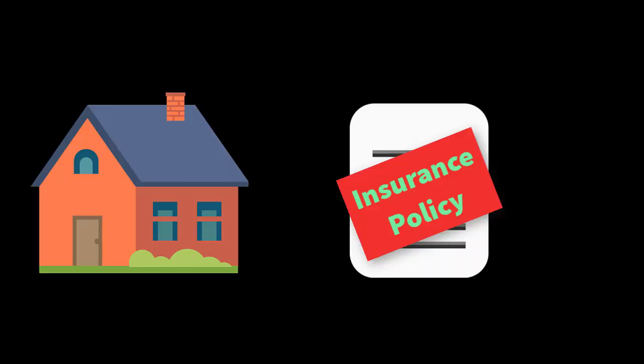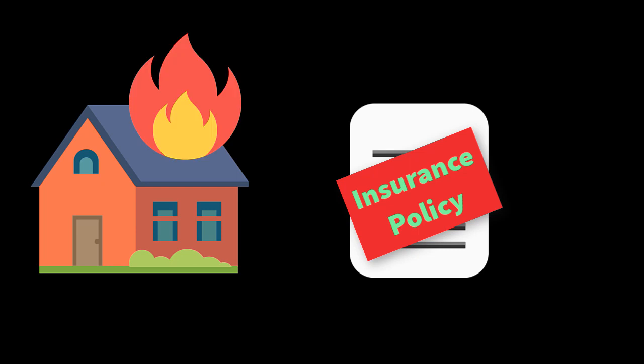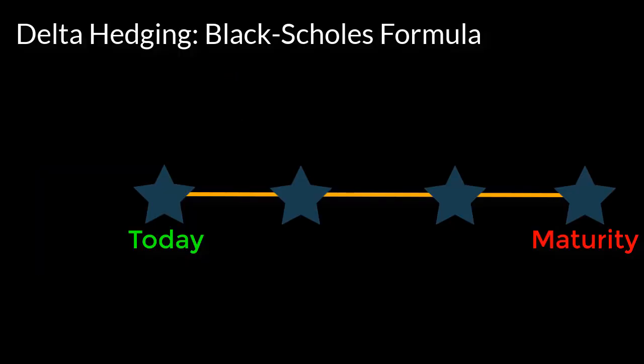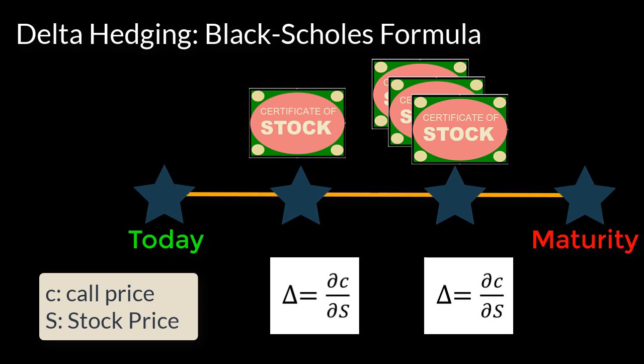Think of hedging as home insurance, but in finance we use hedging to reduce risk from stock price movement. The amount of stocks traded at each time step is calculated using delta from the Black-Scholes formula.